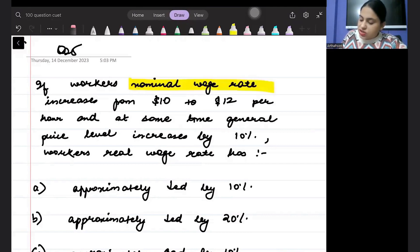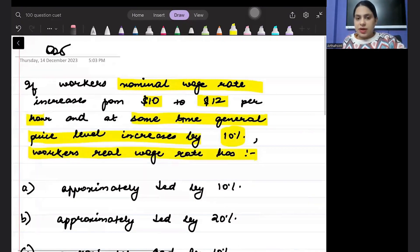if workers' nominal wage rate increases from 10 to 12 and at the same time general price level increases by 10%, real wage has increased by.